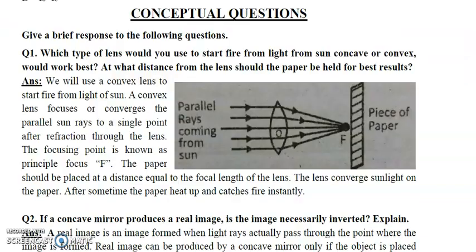Question number one: Which type of lens would you use to start a fire from sunlight — concave or convex? And at what distance from the lens should the paper be held for the best result? We know that the convex lens is a converging lens.